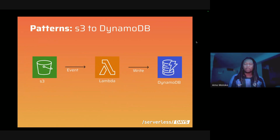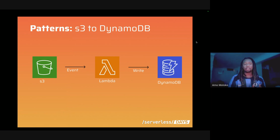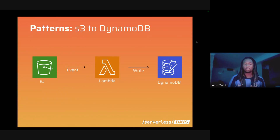Now onto the patterns. In logistics, a driver typically has a pad that you sign, and afterwards you get a proof of delivery or POD via email. In our case, once a transporter has delivered a load, they upload that POD to an S3 bucket. When S3 receives the object, it triggers an event to a Lambda function which writes directly to DynamoDB. We need this to signify that a load has been completed and to change the status of that load.